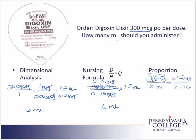Now when I look across the top, milligrams and milligrams match. Across the bottom, milliliters and milliliters match, so I'm ready to do the math. On my first diagonal, I'll take 0.3 times 2.5, and that gives me an answer of 0.75. On my second diagonal, I'll take X times 0.125, and that gives me 0.125x. To solve this, I'll divide both sides by 0.125 to isolate X. On the right-hand side those cancel and I have X. On the left-hand side, my calculator gives me 6, and looking back at my proportion, the label on that X is milliliters.